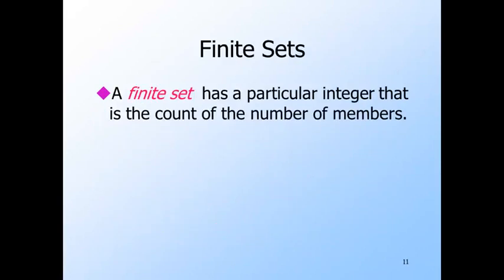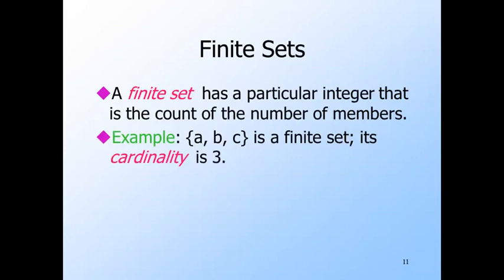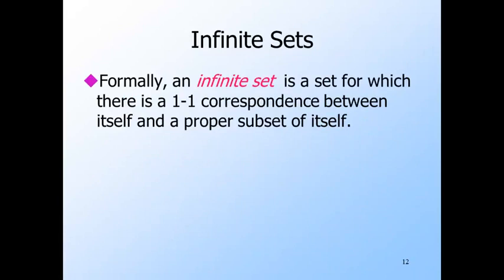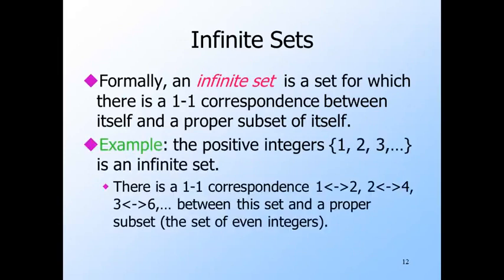We have an intuitive notion of when a set is finite or infinite. A set is finite if there is a particular integer that is the count of the number of members of the set — the term for this count is cardinality. For example, a set containing a, b, and c has cardinality three. The formal definition of an infinite set is one for which there is a one-to-one correspondence between its members and a proper subset. For example, the positive integers are infinite: we can match each positive integer i with the even integer 2i, pairing them one-to-one with the even integers as a proper subset.